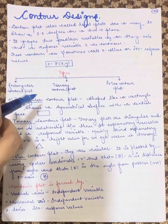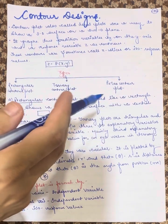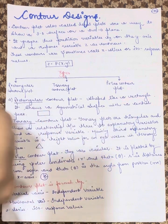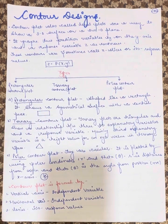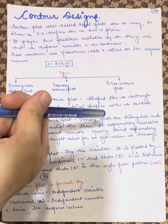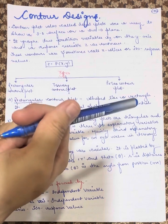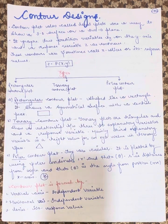The rectangular contour plot is shaped like a rectangle. It shows a symmetrical surface with a central peak.